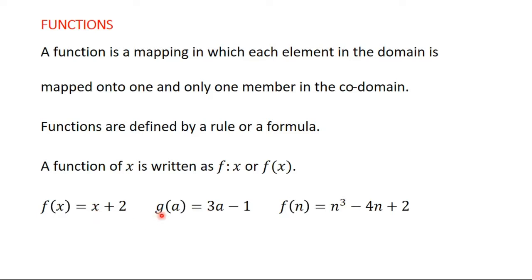We also have g(a), which is a function of a, and f(n) = n³ - 4n + 2, which is a function of n. Under functions, we are usually given the rule or formula, then asked to find images of elements in the domain, or sometimes the image is given and we find the element that maps onto it.